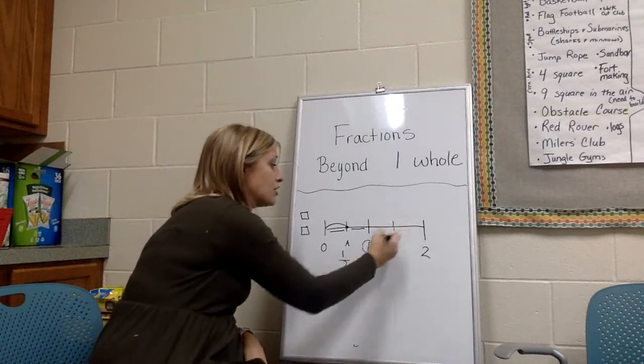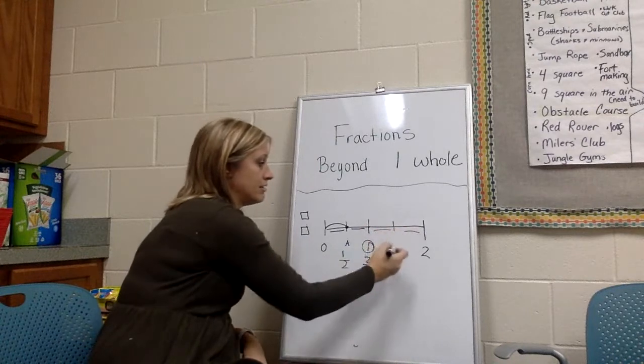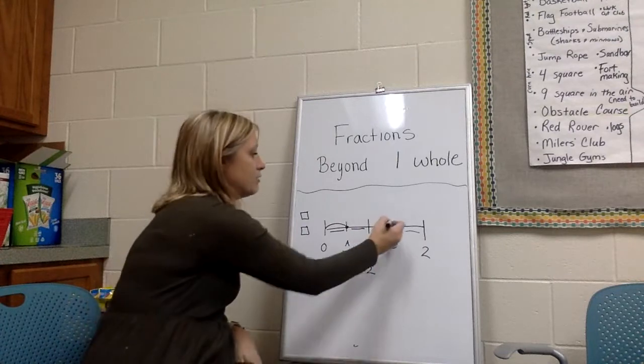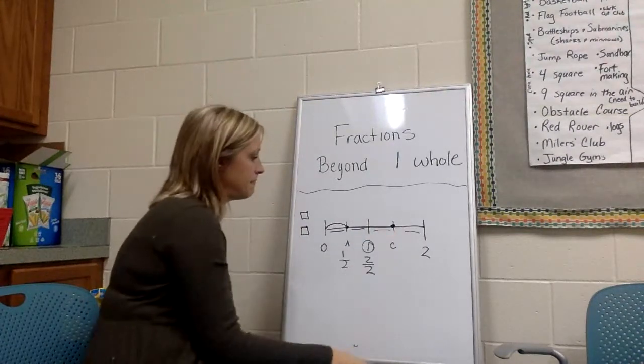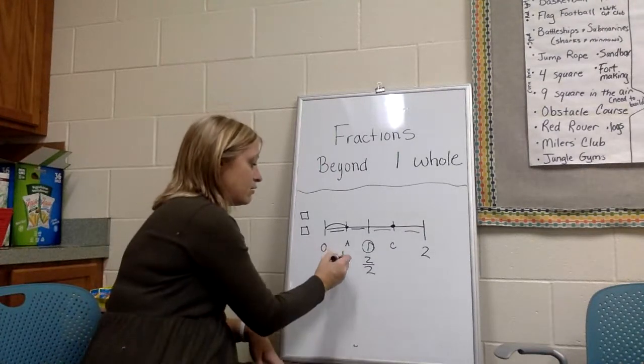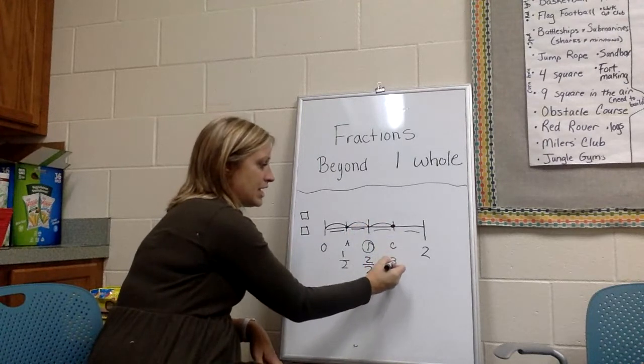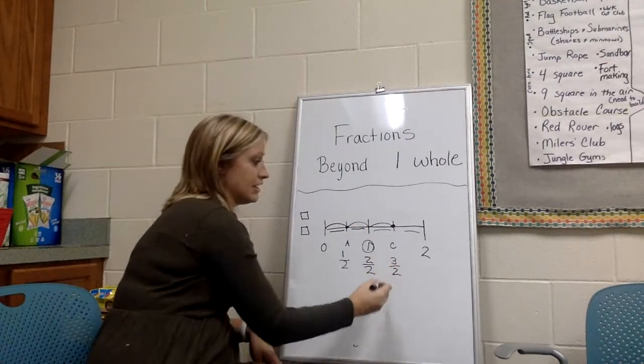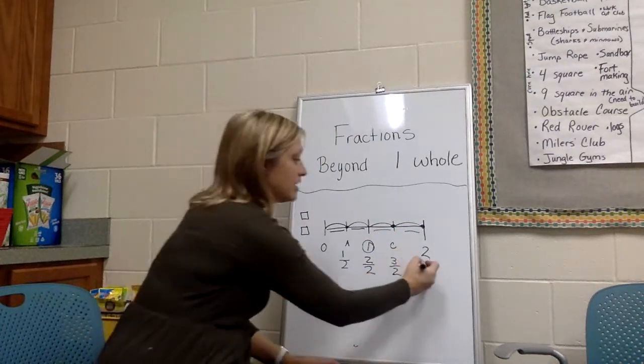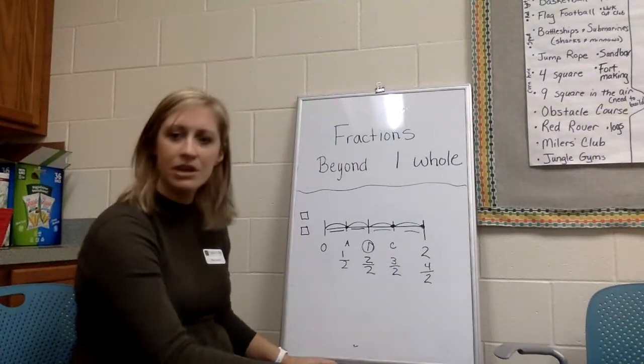And now I want to go beyond one. So I am going to make two parts again. I still have a bottom number of two. But what would C be? Right here. What would this be if this was C? Well, I'm hoping you're starting to see a pattern. Because we had one half here, and then we have two halves there, and now we have three halves. Can anybody guess what this will be? Well, two is four halves. So that is how that works.